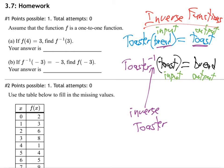They're saying F of 4 equals 3, meaning you put in 4 and you get out 3 — just like the toaster idea. So if you take the inverse function, see the minus 1 up there? That means inverse. If you put in 3, you get back 4. It just switched the input and output, so the answer is 4.